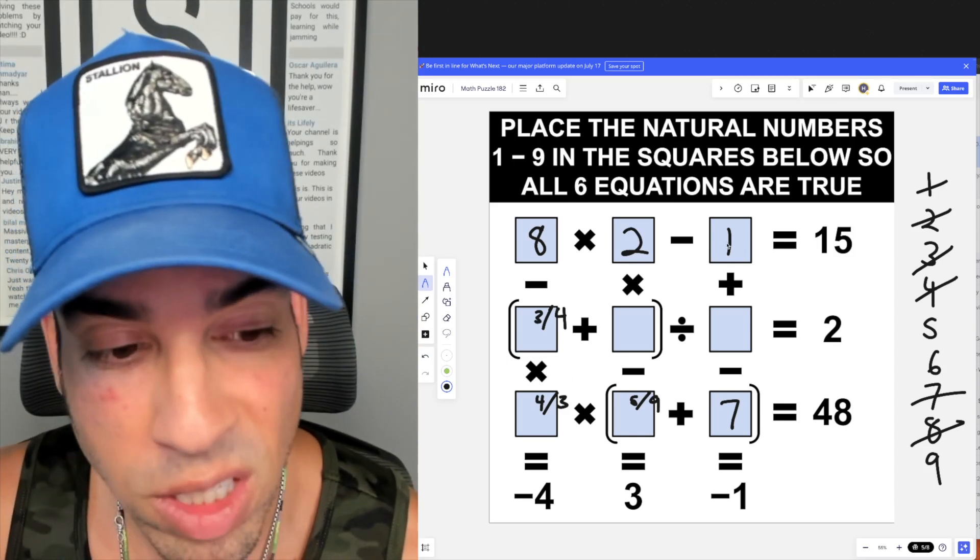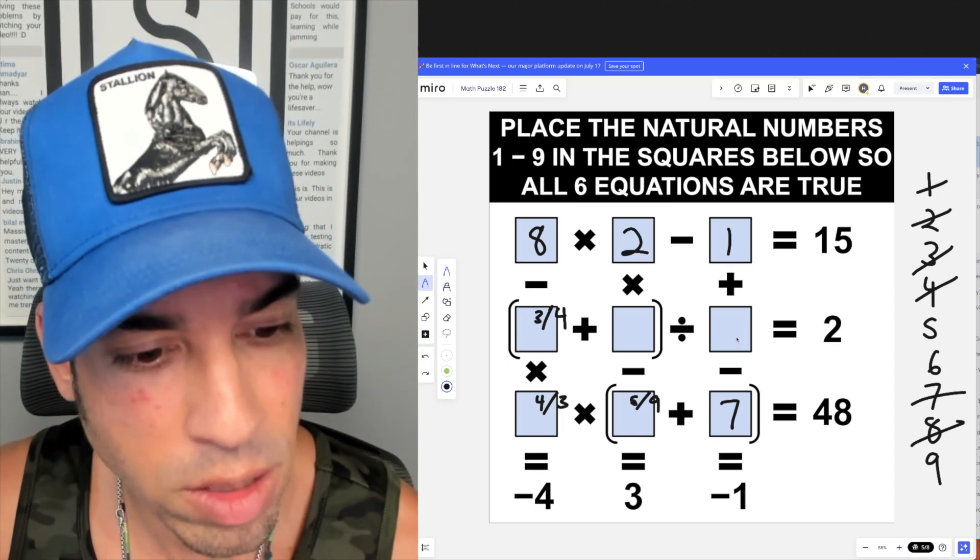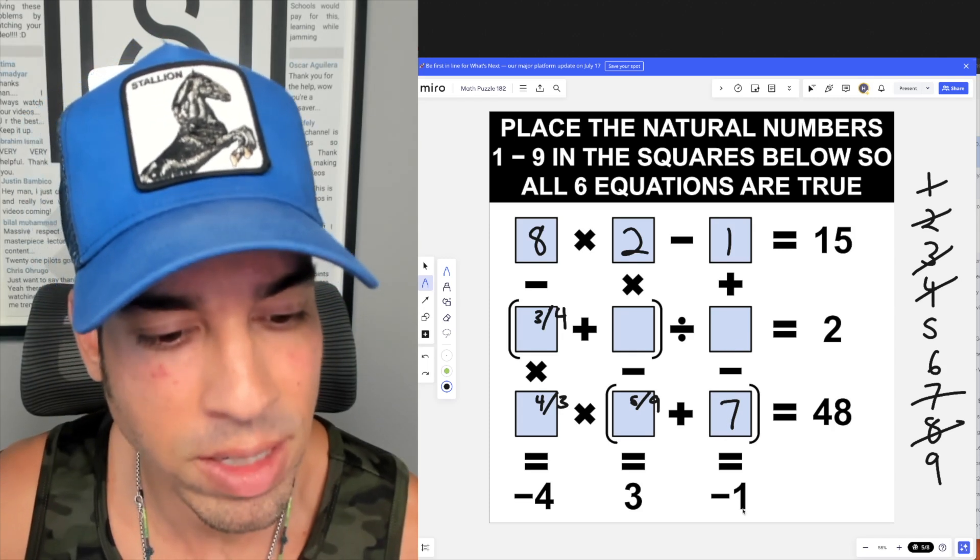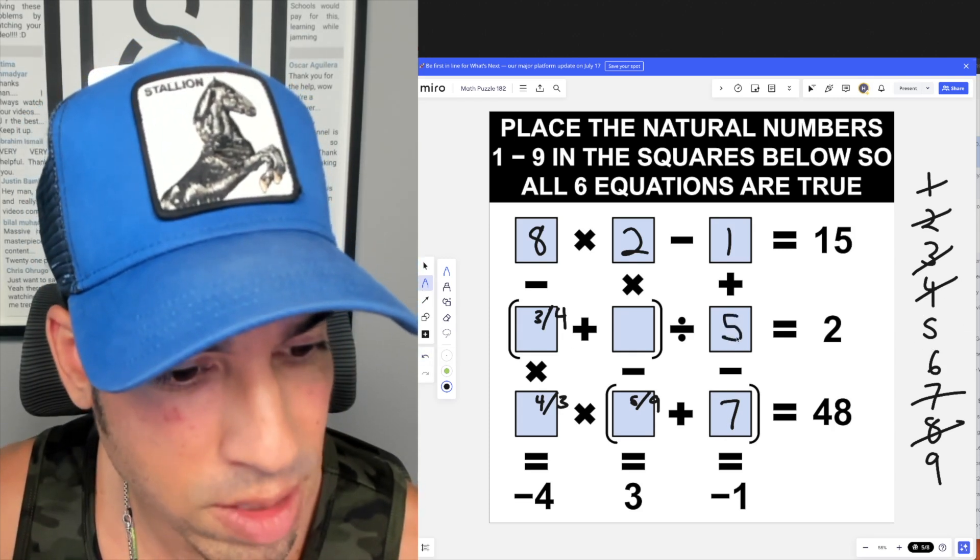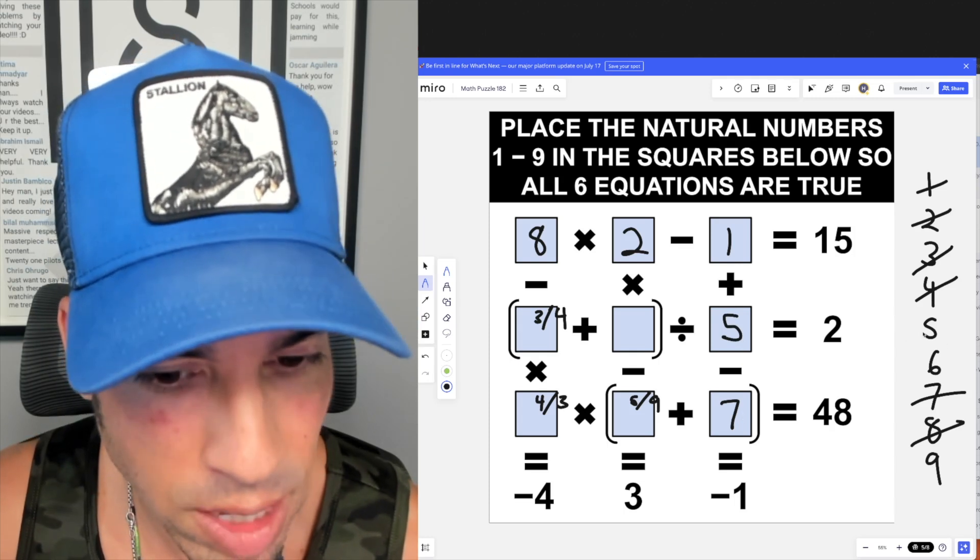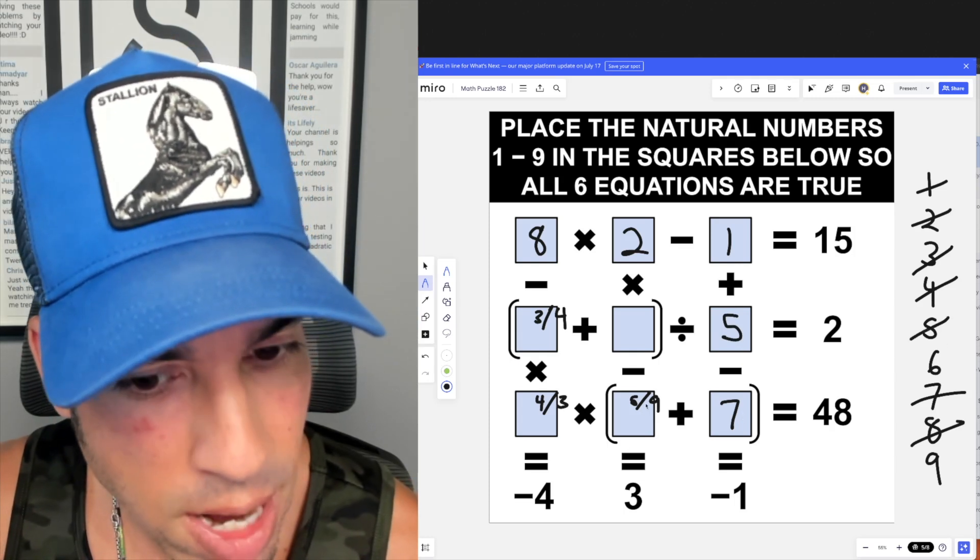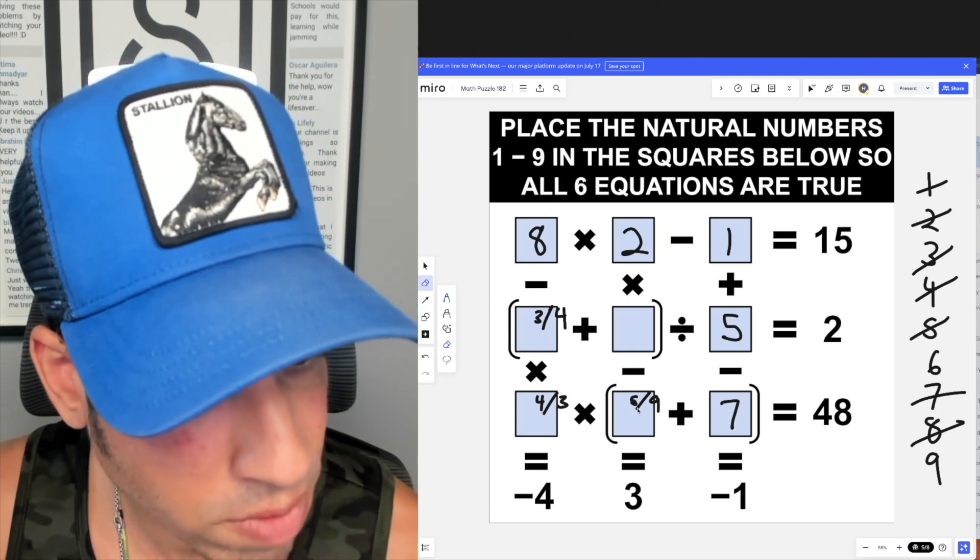Now we can come back to this. If I know that this is one, one plus what minus seven gives me negative one? That's got to be a five, because one plus five is six minus seven is negative one. If I know I have five gone, I can say that this five is out - that was paired with the four.